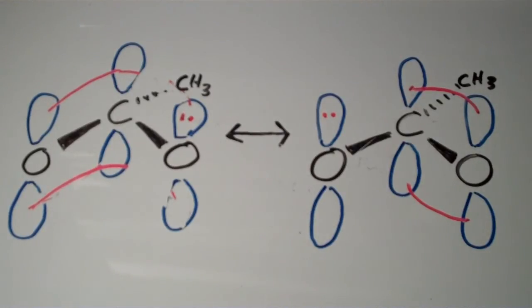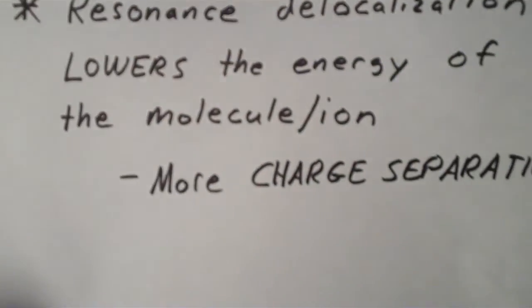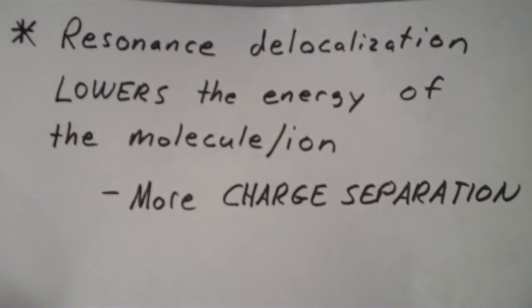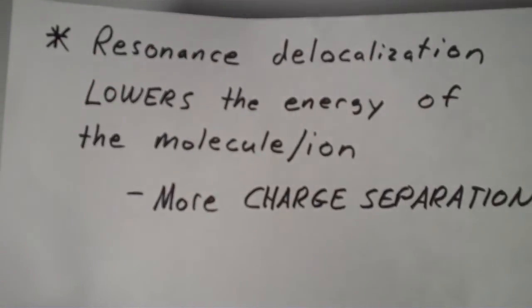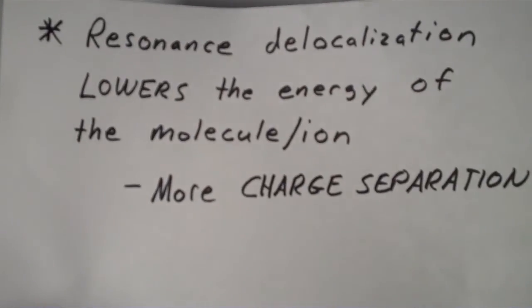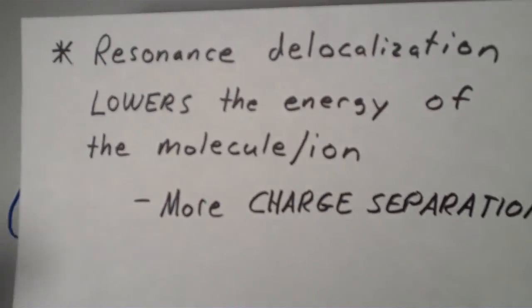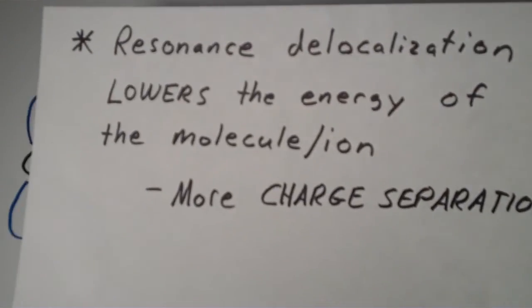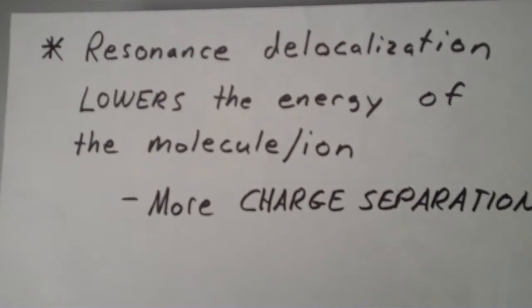And basically what this lower energy comes from is charge separation. When the negative charge is separated over a larger area, that means that the molecule is more stable. There's more places per unit volume or unit area to put that charge.